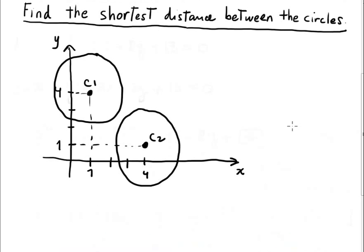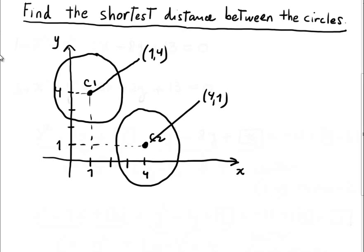Ok, this is approximately a rough sketch for the circles. The first center is located at point (1, 4), the other at point (4, 1), and the radius is approximately 2. So what is the idea? I need to find this distance — you draw the segment line connecting both centers, and that gives the shortest distance.